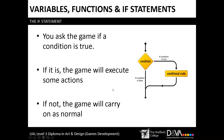An example of this could be checking your player's HP variable. You would ask the game: if HP is less than or equal to zero, meaning that the HP is below one, then the conditional code would be to go to a game over screen. However, if it's above zero — so it's one or above — then just carry on the game as normal.